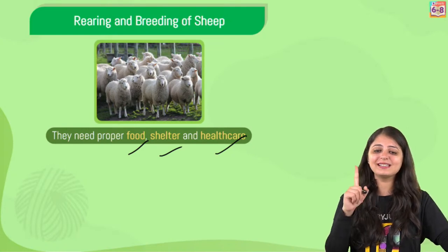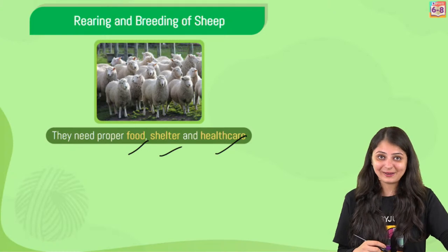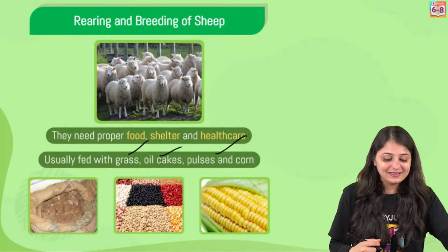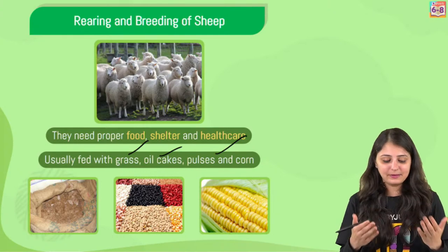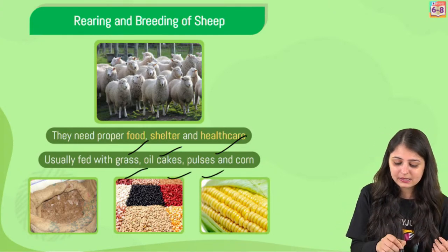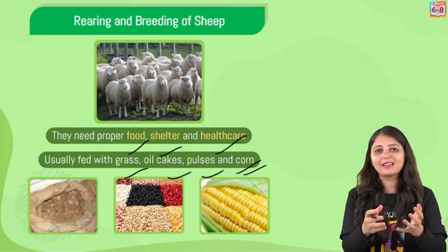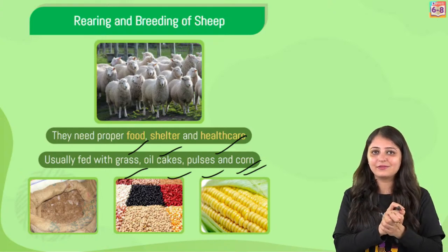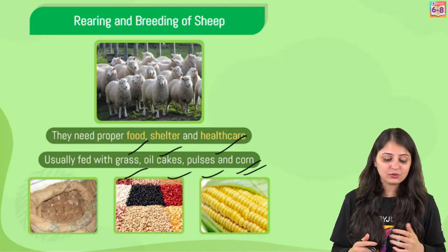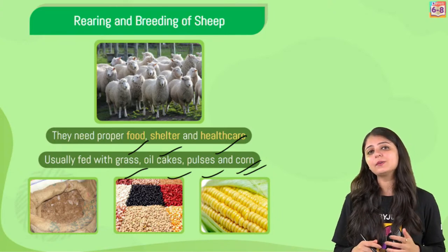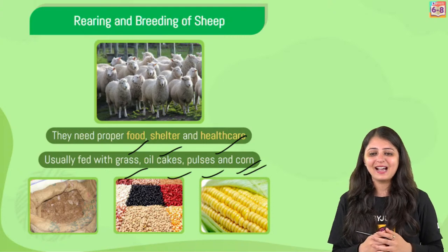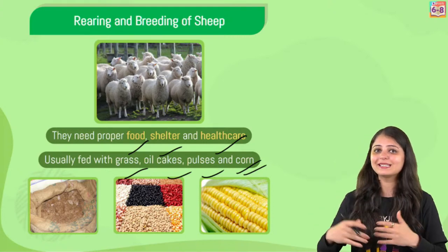Shearing is different from rearing - we'll come to shearing also. Now usually sheep are fed with grass, oil cakes, pulses, and corn. You know that oil cake - it's the material left once the oil has been removed from the seeds. You must have observed shepherds taking sheep for grazing.